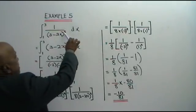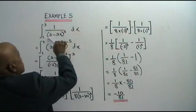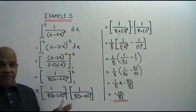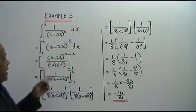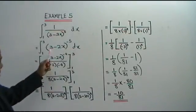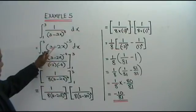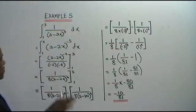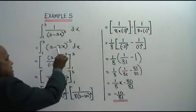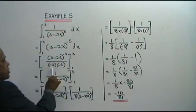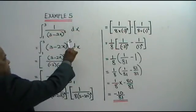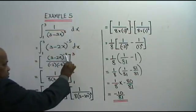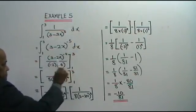Bring the power 5 up, so the power becomes negative 5. This is a linear expression. So when we integrate this, negative 2 comes here. Negative 5 plus 1 is negative 4, and you bring the negative 4 down.